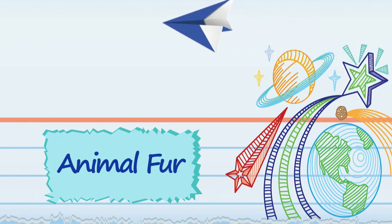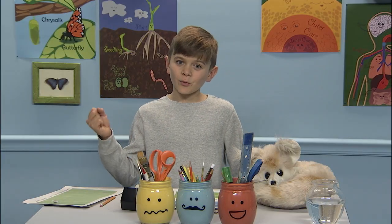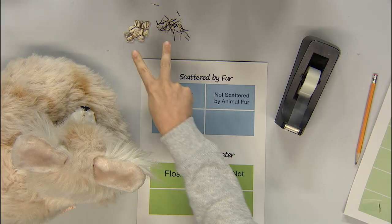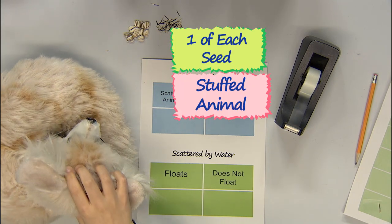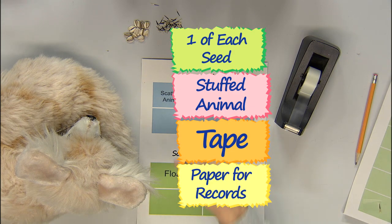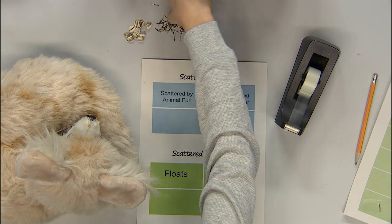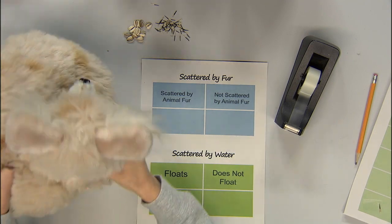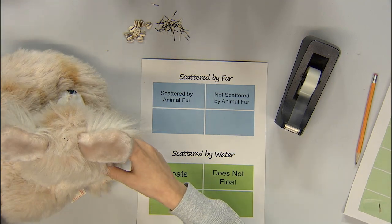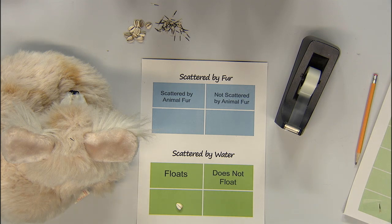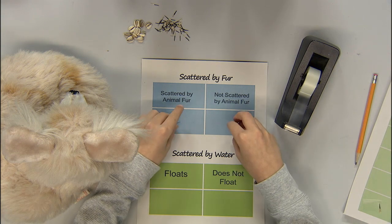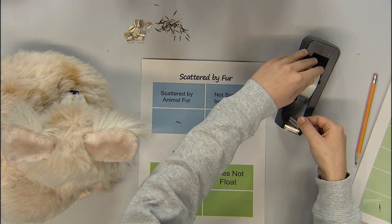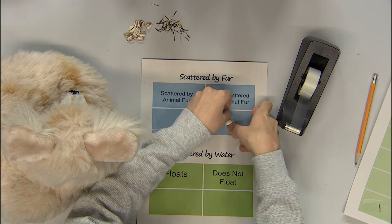Experiment number two. Let's see if the seeds use animal fur to get around. For this, you will need one of each seed, a stuffed animal — I'm using my sister's stuffed fox — tape, and your results paper. Place each seed on the animal, then gently shake it. Do your seeds fall off or stay on? If they stay on, they can travel by animal fur. Wow, that's not what I expected to happen. Time to record your results. Tape your seeds in the correct boxes: scattered by animal fur, or not scattered by animal fur.